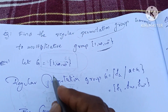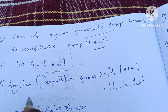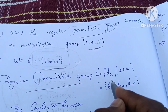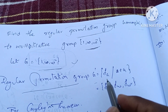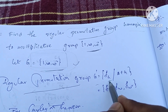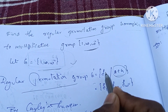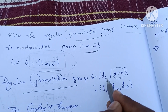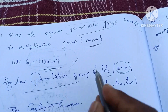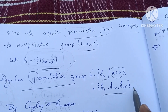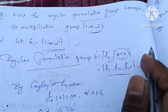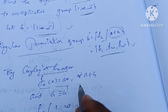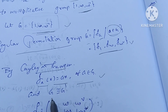So let g be defined. The regular permutation group g dash is defined by a function f_a, where a belongs to g. f_a, where a is equal to g. We can write f_1, f_omega, f_omega_square. By Cayley's theorem, we can write f_a of x is equal to ax, for all a belongs to g, and g is isomorphic to g dash.